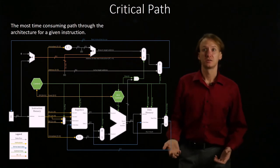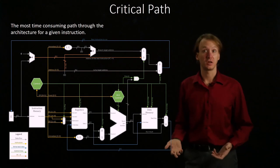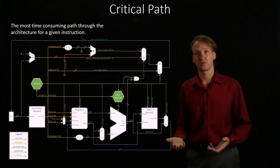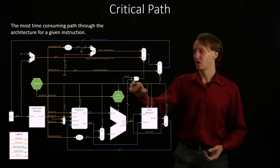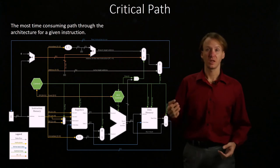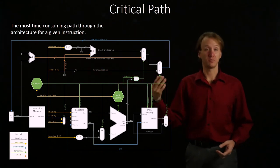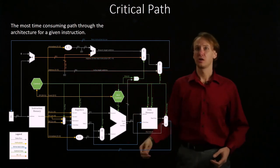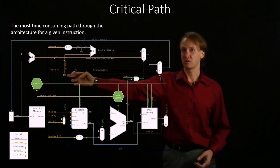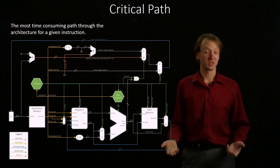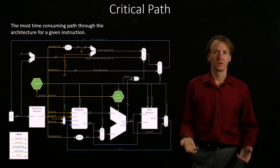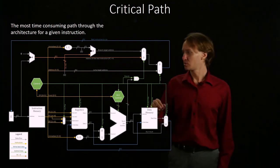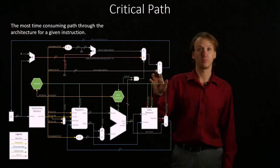In this case, the control unit is probably going to be interesting, because the control unit is going to take longer to determine what those control signals are than it will to actually put together this jump address. This jump address is really just built by shifting a bunch of bits around, a couple of lines from program counter plus four, a couple of new zeros coming in, as well as the bits coming straight out of the address. None of that is really going to require any extra time. We have to make sure that our control unit is capable of setting the jump multiplexer before we allow it to execute.